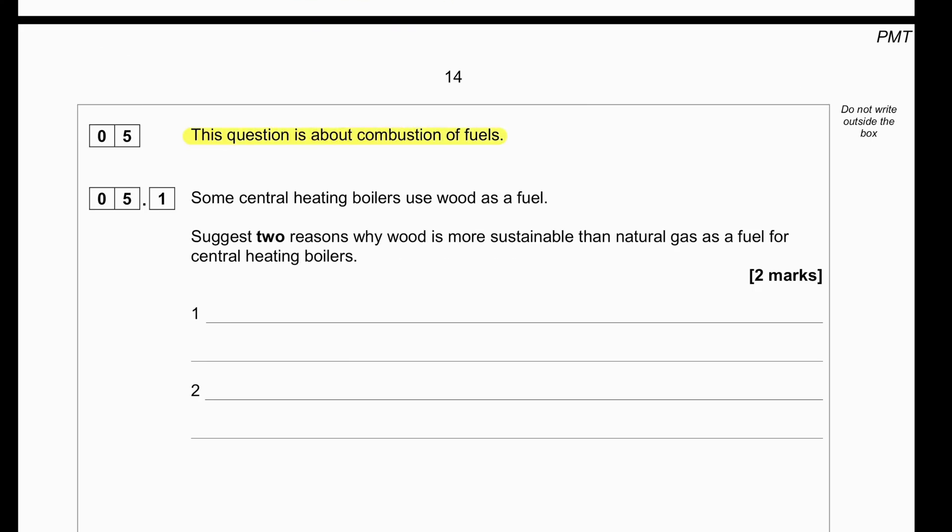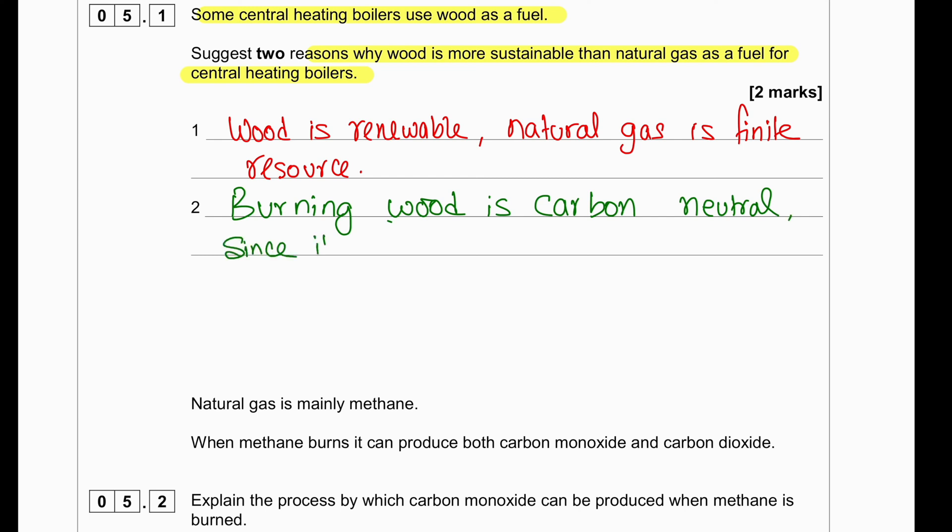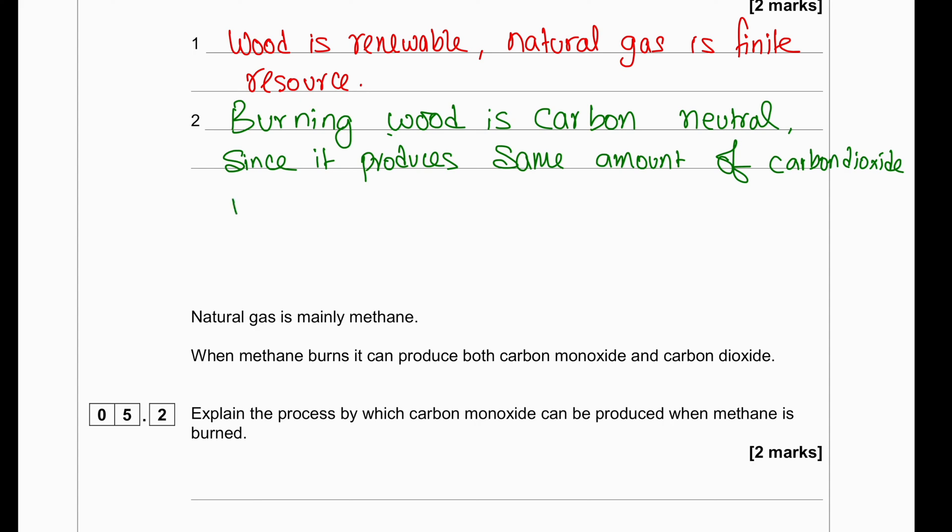This question is about combustion of fossil fuels. Some central heating boilers use wood as a fuel. Suggest two reasons why wood is more sustainable than natural gas as a fuel for central heating boilers. Wood is renewable because we can grow wood naturally, but natural gas is a finite source. It takes millions of years for natural gas to form underneath the earth. The burning of wood produces the same amount of carbon dioxide as the tree absorbs, which makes wood a green solution for central heating boilers. Because once we are going to try to grow that particular wood, then the production of the particular wood will absorb the same amount of carbon dioxide from the air. It offsets when it is burned.